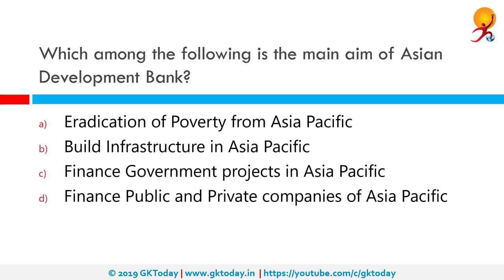Which among the following is the main aim of the Asian Development Bank? The Asian Development Bank, or ADB, is a regional development bank established on 19 December 1966.